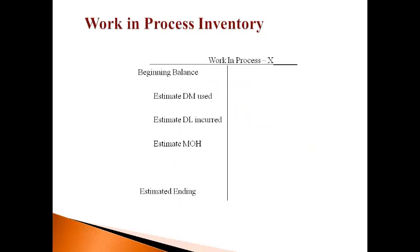Each product has a separate work in process account that records the estimated cost to make products. The total cost to make each product is only an estimate because the actual cost was not tracked. The ending balance in total for the company is determined by estimating the value of goods still remaining on the production line. The difference is the cost that was finished during the period. These costs are moved to finished goods. Work in process is generally an immaterial amount reported on the balance sheet at the estimated amount, and any difference from actual is not big enough to matter.